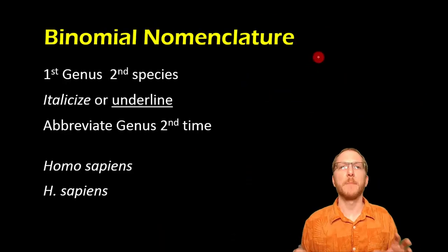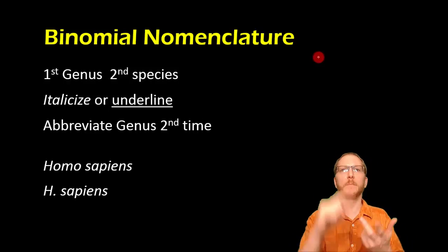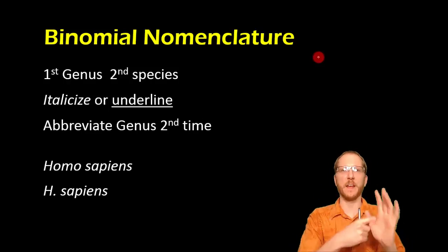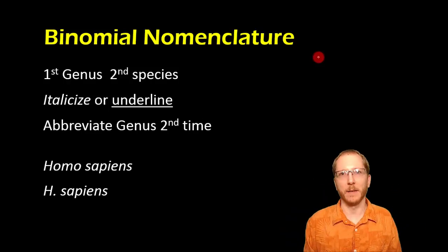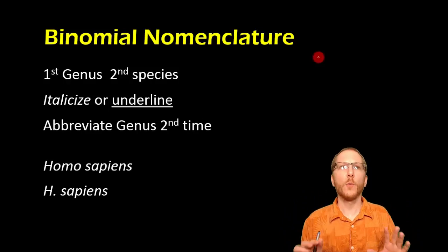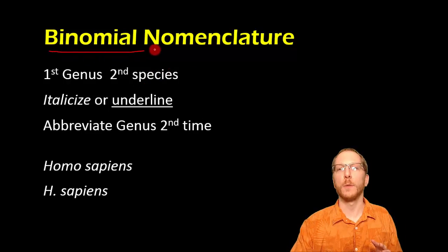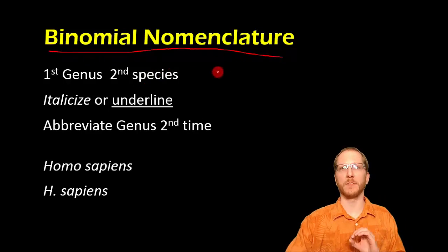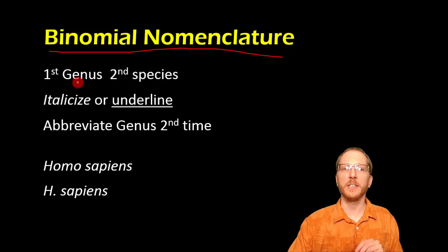The other main thing Linnaeus came up with is he realized that trying to name an organism using a kingdom, phylum, class, order, family, genus, and species name is a lot of naming. So he said the way we're going to do this is we're just going to have a scientific name using binomial nomenclature — just two names. And those two names are going to be the genus and the species.